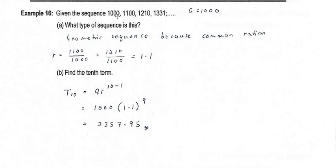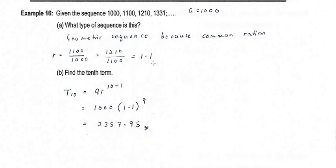Given the sequence 1000, 1100, 1210, 1331 — what type of sequence is this? To determine whether it is arithmetic or geometric, we find whether the sequence has a common difference or common ratio. 1100 divided by 1000 equals 1.1, and 1210 divided by 1100 also equals 1.1. Since the sequence has a common ratio, this is a geometric sequence.